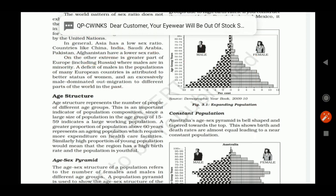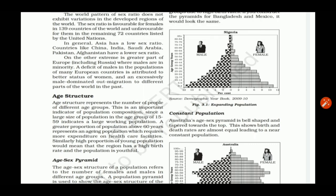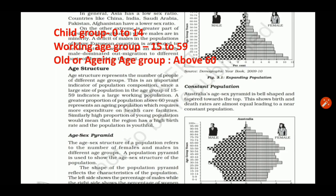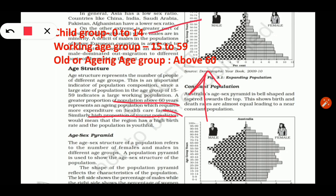Next, we will discuss age structure. Our whole population is divided into three age groups: the child age group (0 to 14), the working age group (15 to 59), and the old age group (60 and above). Both the child and old age groups are known as the dependent age group. The working age group is most important for the economic development of any country. In recent times, the proportion of aging population is increasing in many parts of the world, which leads to increased healthcare expenditure. Countries with a higher proportion of children have a high birth rate.